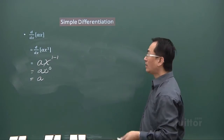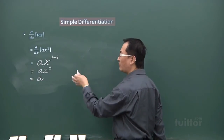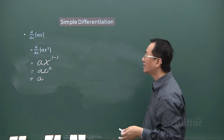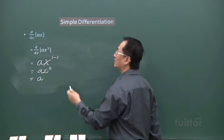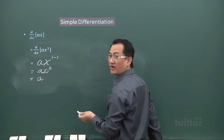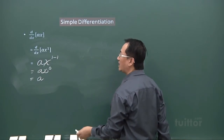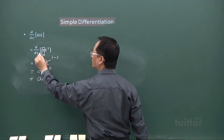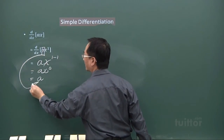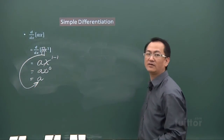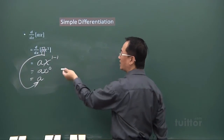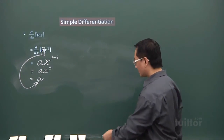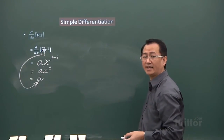To simplify and go through differentiation quicker: whenever you have an x term to differentiate, you simply write down the coefficient of it. That is the fastest approach. You can avoid going through it in detail each time, but understanding the steps is important for your foundation.